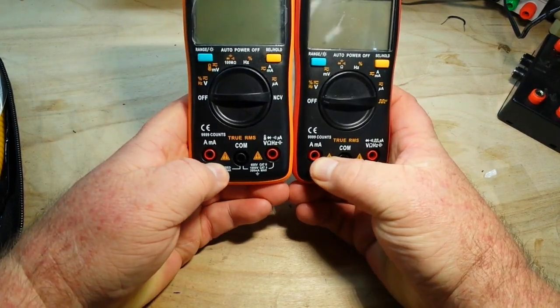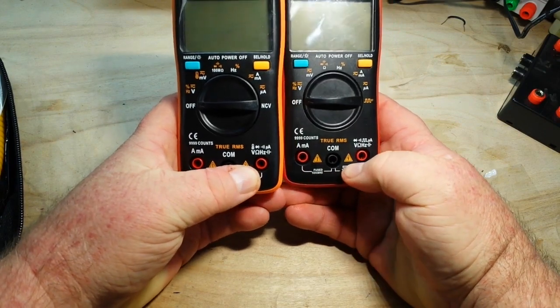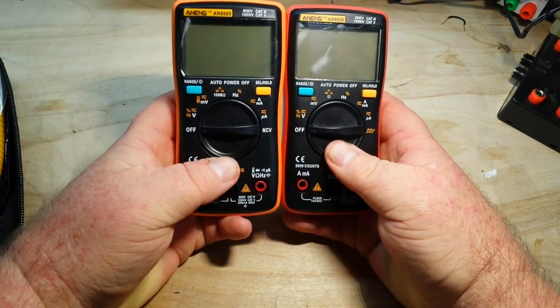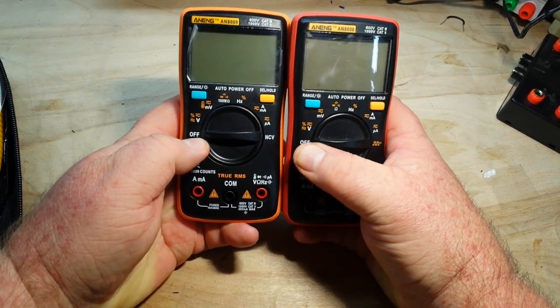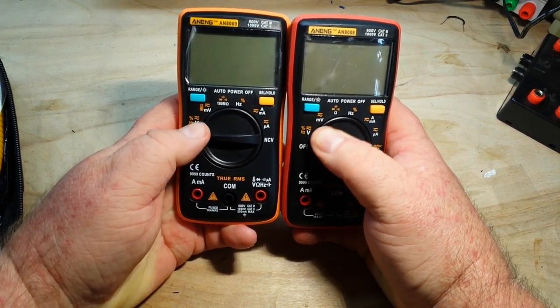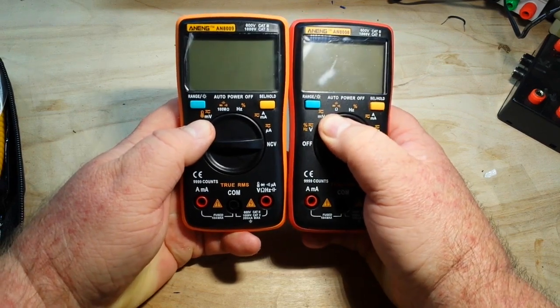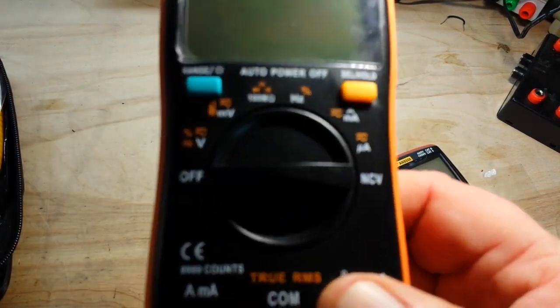Our connections down here, amps and milliamps, common, and all the other functions are the same. Now let's look at our selectors here. We have off and off, voltage and hertz, millivolts, but on the new 8009, look at that.